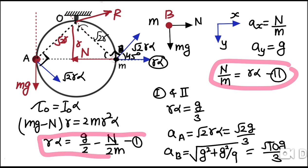Using equations 1 and 2, we get R·alpha = g/3. The acceleration of bead A equals root(2)·R·alpha, since it is in pure rotational motion with only tangential acceleration, giving root(2)·g/3. The acceleration of bead B has two components: the x-component is N/m = R·alpha = g/3, and the y-component is g. The resultant is the vector sum of g and g/3 at 90 degrees, which gives root(10)·g/3.